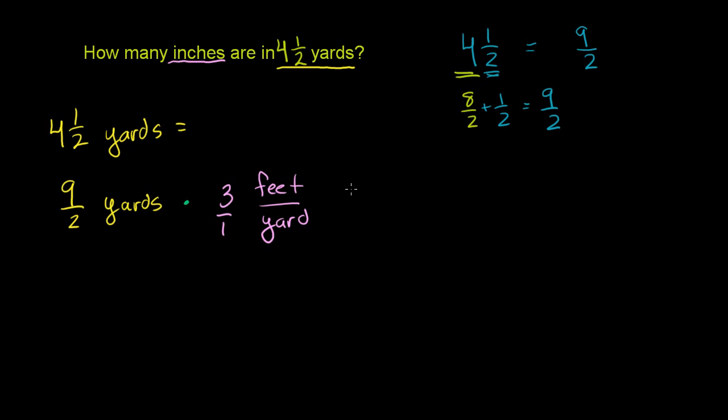So if we multiply by 3, right over here, the 9 times 3 is 27, over 2 times, let me write it out. Let me take it step by step, not skipping any steps. So this is equal to 9 over 2 times 3 over 1 yards. This yards right here, I'll do it in orange.